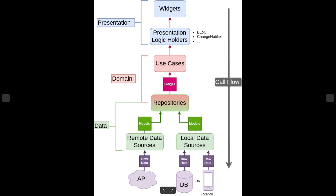Entities are just objects — for example, a user entity is a class that has an ID, a username, and all those data types you may have in a class. We also have repositories in our domain. The repository is kind of a gradient — it sits in between the domain and the data layer. So we have a repository in the domain and also a repository in the data layer, and they will have some kind of relationship which we will see later in the code.